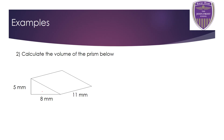Shape number two is a triangular prism. The cross-section is a triangle. To find the volume, I need the cross-section area first: base times height divided by 2. The base is 8 millimeters and the height — always the vertical height — is 5 millimeters. We divide by 2, then multiply by the length, which is 11 millimeters.